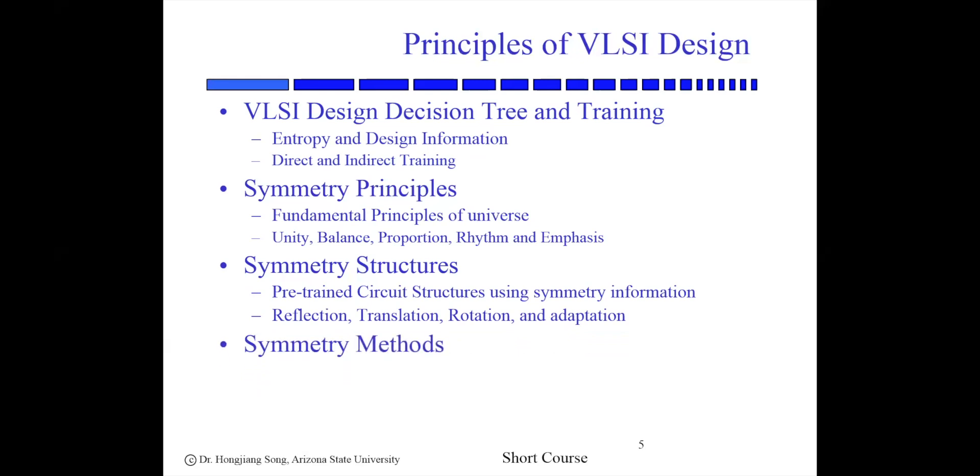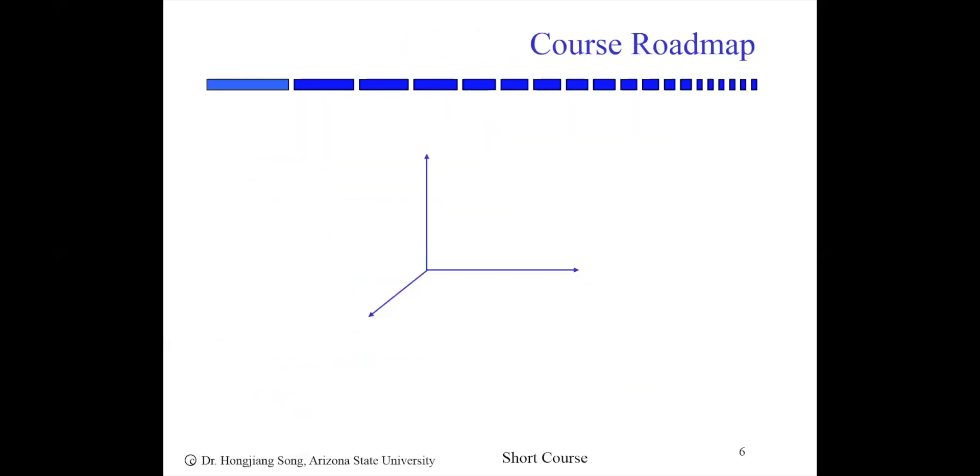On top of principle and structure, we're going to be building the symmetry-based design methodology. This includes pre-trained structures in decision tree and procedures that build symmetry into our methodology itself. So here's the roadmap. In this class, we're going to look into the decision tree and also training strategies. There are three training strategies which can be used to minimize the entropy and get the design information. The first one is layer reduction, second one is branch reduction, and the third one is criterion function and probabilityashing.